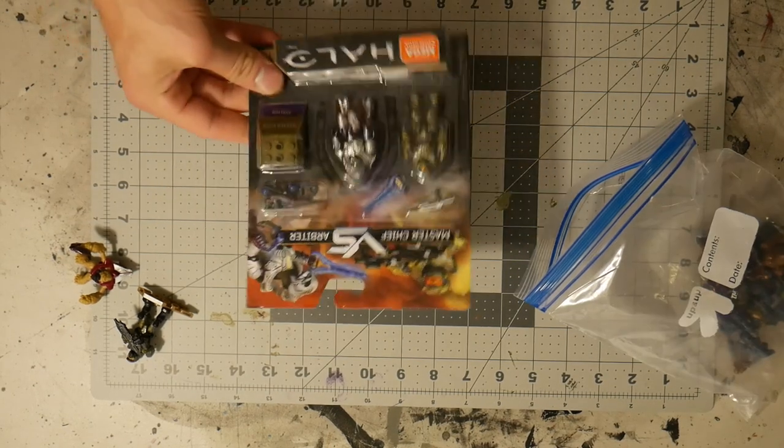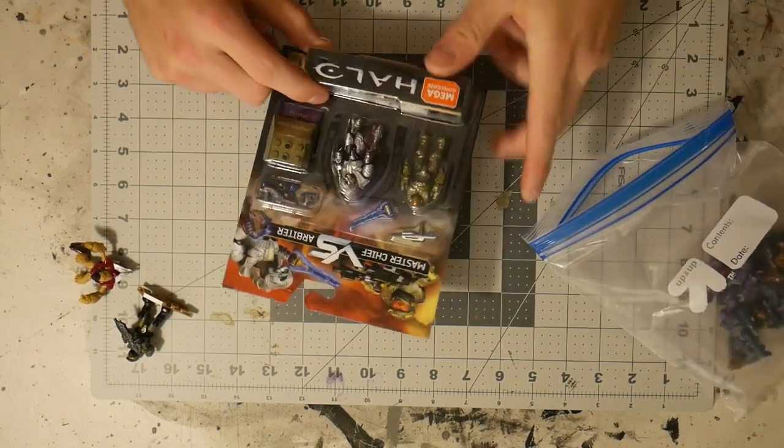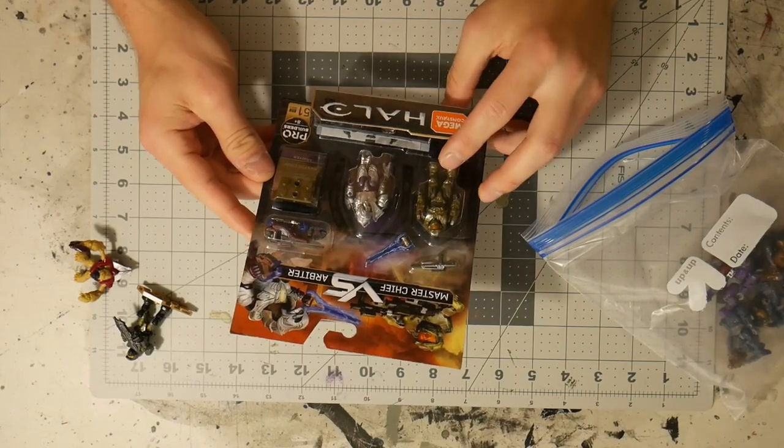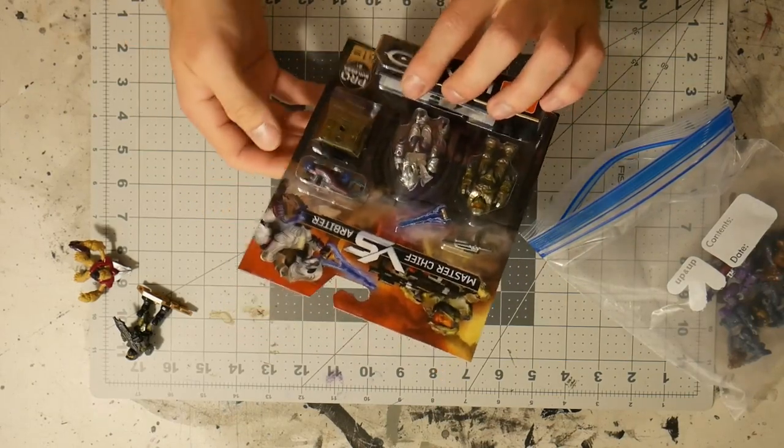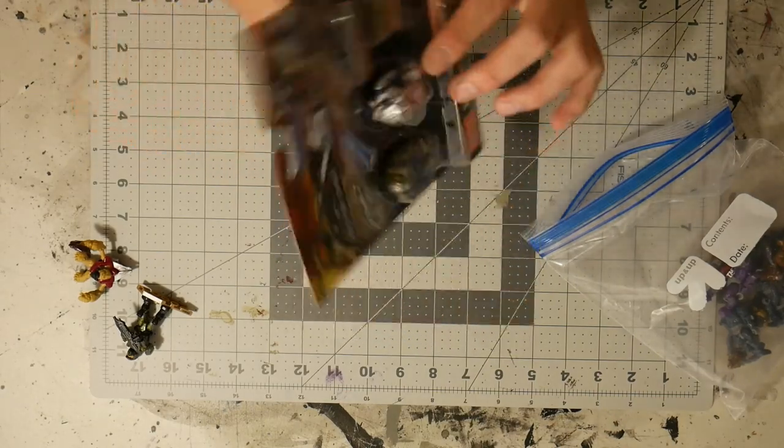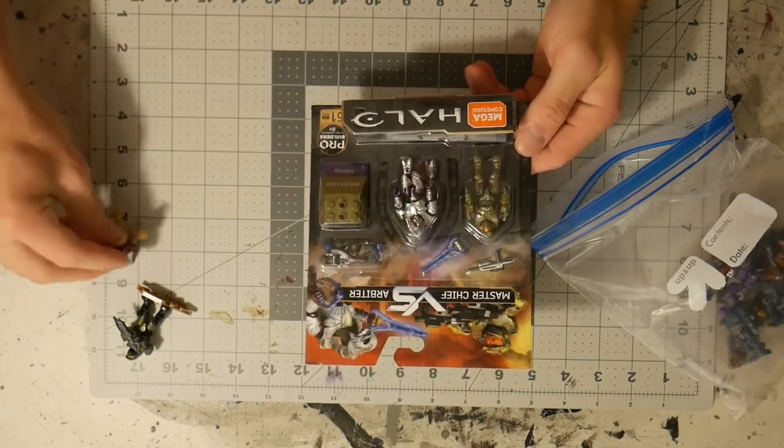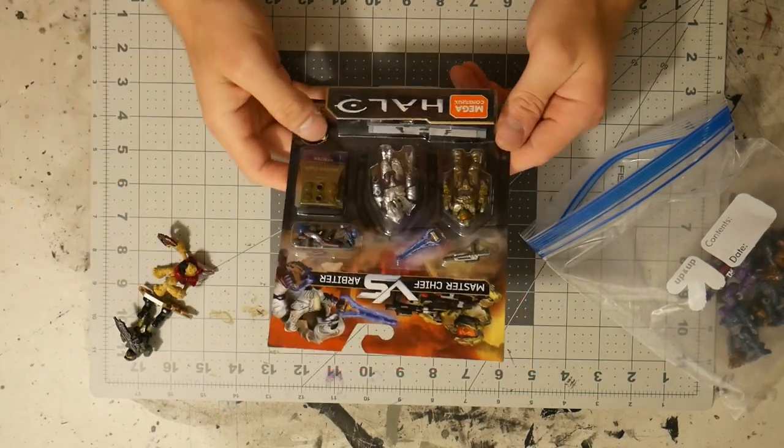And also I found this a little bit ago. This is the Master Chief versus Arbiter Halo 3 I guess double battle pack. It's in the series 10 and I found this when I was looking at a bunch of Walmarts and finding these poly bags but I also found these and I was going to make a video on this.